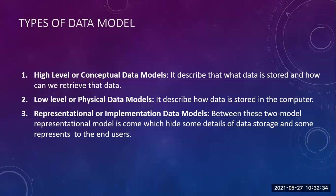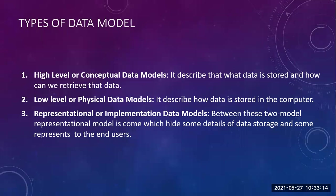The three types of data models are very easy. These data models you are going to learn now will be similar to the three-schema architecture as well as data independence. So if you learn the types of data models now, it will be very helpful for your next topics. The first type is the high-level or conceptual data model. The second type is the low-level or physical data model. And the third one is the representational or implementation data model.